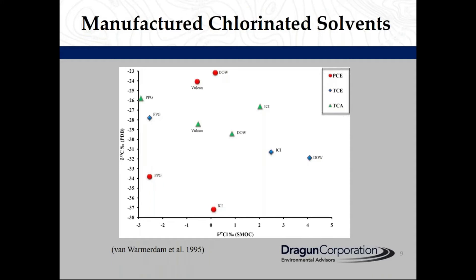CSIA works well for chlorinated solvents because they are manufactured products and their isotopic signatures can vary depending on the isotopic ratios of the starting material and also the particular chemical processes used to manufacture the product. As you can see in this plot, PCE from different manufacturers has different isotopic signatures, and the same is true for TCE and TCA from different manufacturers. So if there are several dry cleaners in an area using PCE with different isotopic signatures, their releases to the subsurface can be distinguished using CSIA.